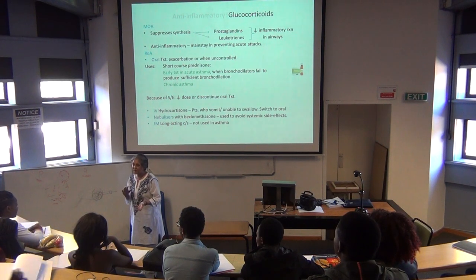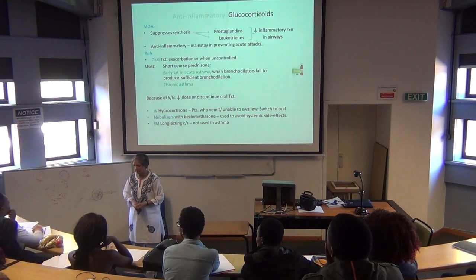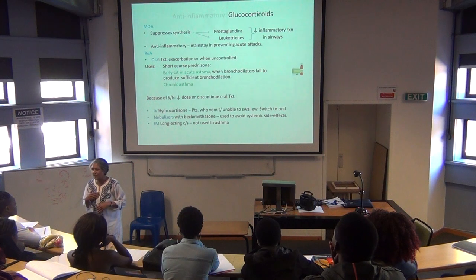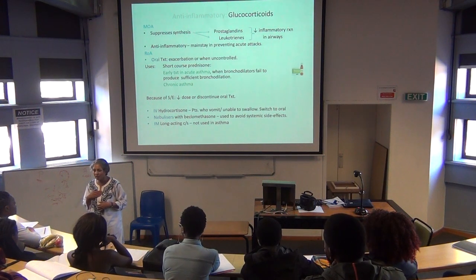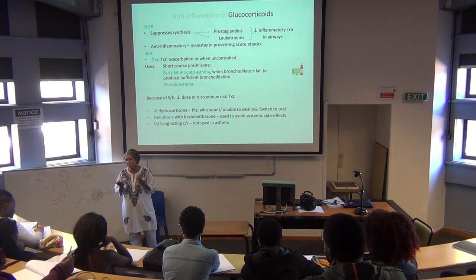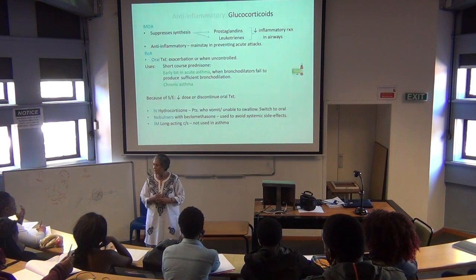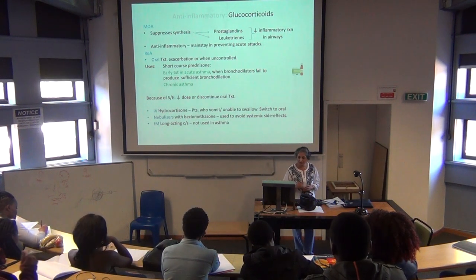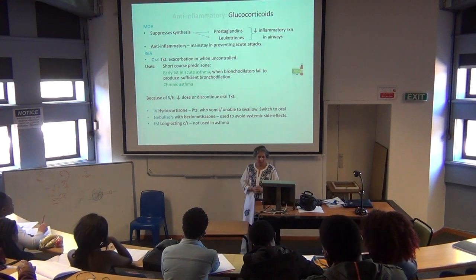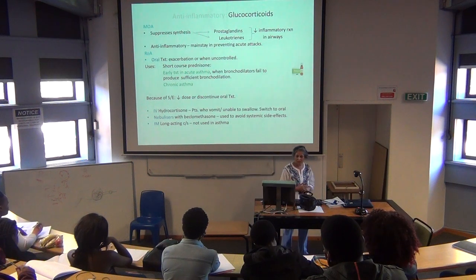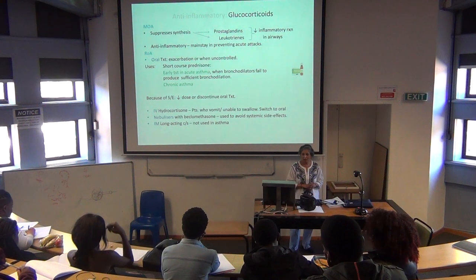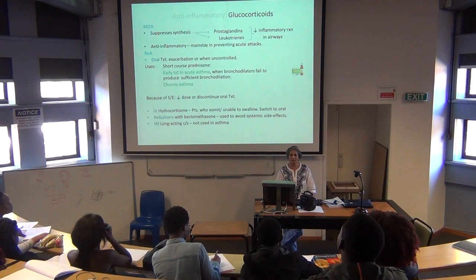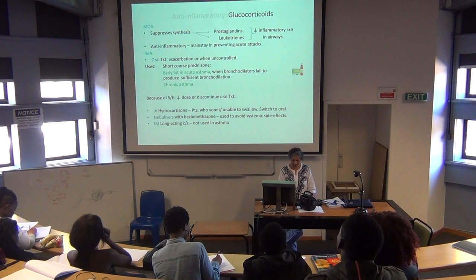If patients can't swallow, we give it IV. If the attack is not very severe but they can feel things aren't right, they can take it orally. If unable to take it orally, IV hydrocortisone is given, or via nebulizer. Long-acting corticosteroids are not used much now in asthma — we stick to IV hydrocortisone and prednisone, then change to oral because of the side effects mentioned earlier.